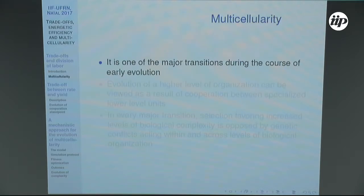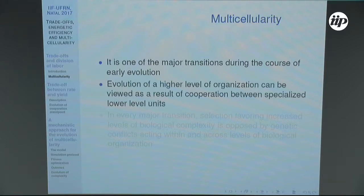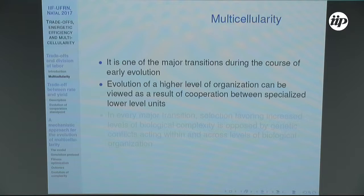Modularity is known as one of the major transitions in evolution. We have the appearance of a new higher level of biological organization — this can be seen as the cooperation between lower-level units. For example, a multicellular organism can be seen as the cooperation between single cells. They decide to cooperate, and for some reason this brings advantages for everyone inside the aggregate, which by natural selection can grow and spread.